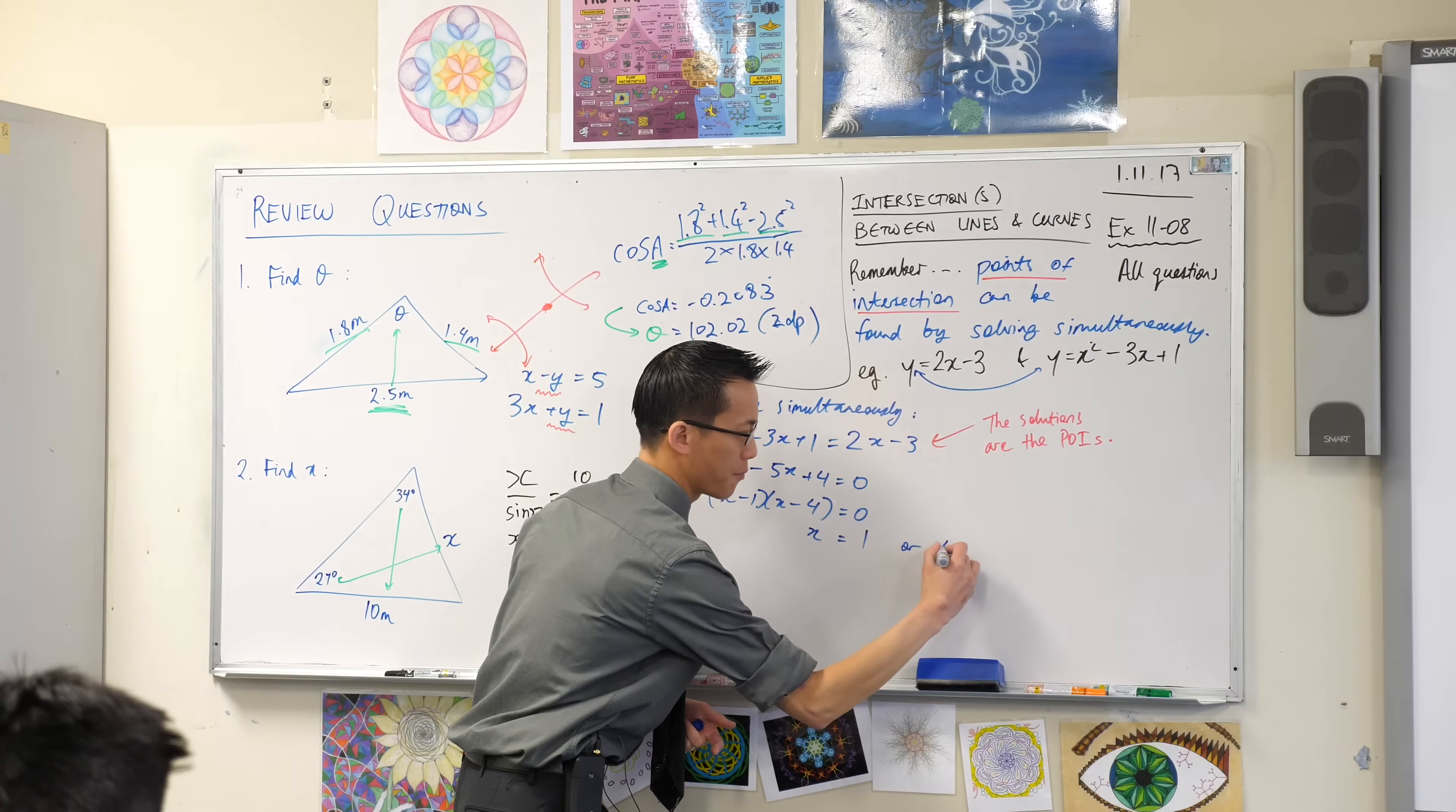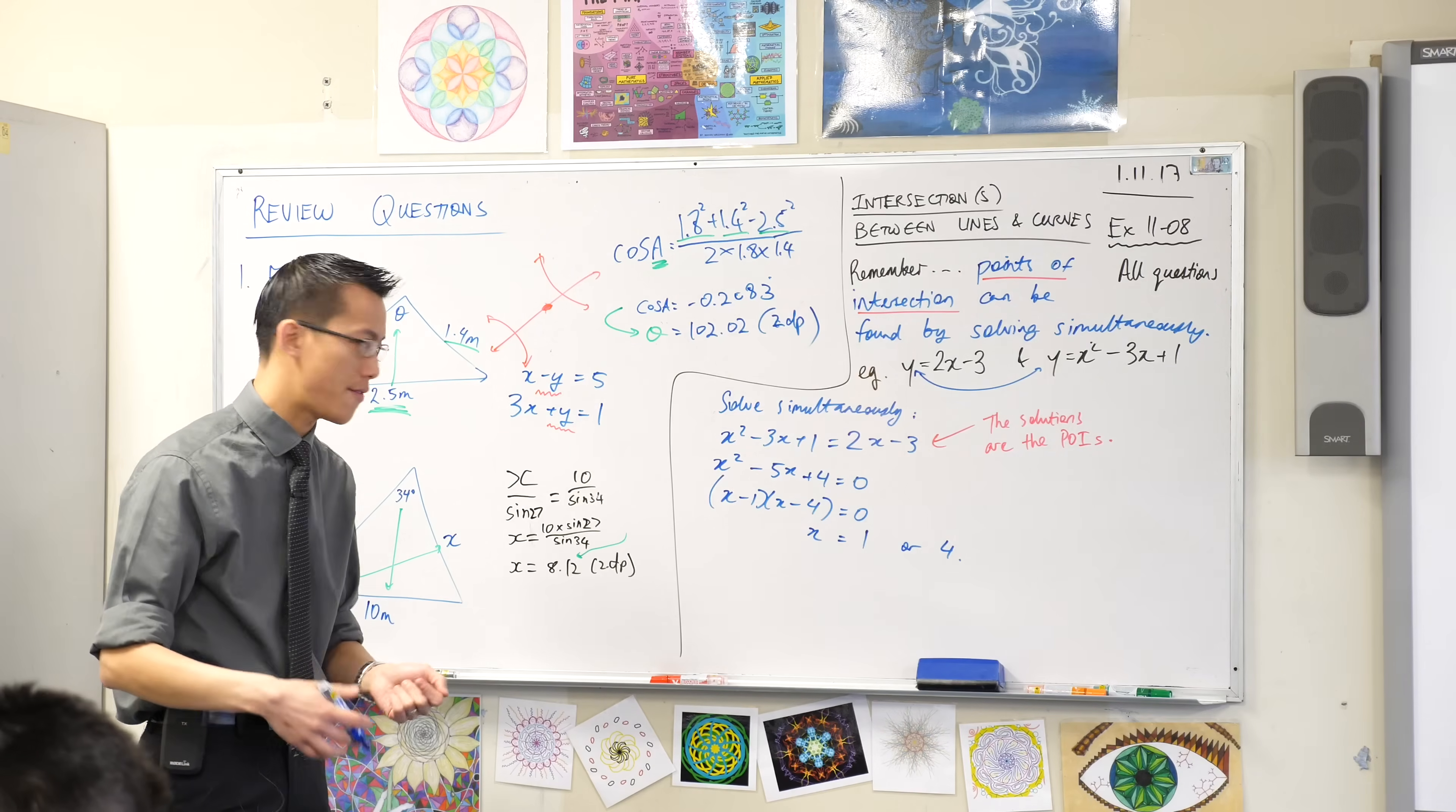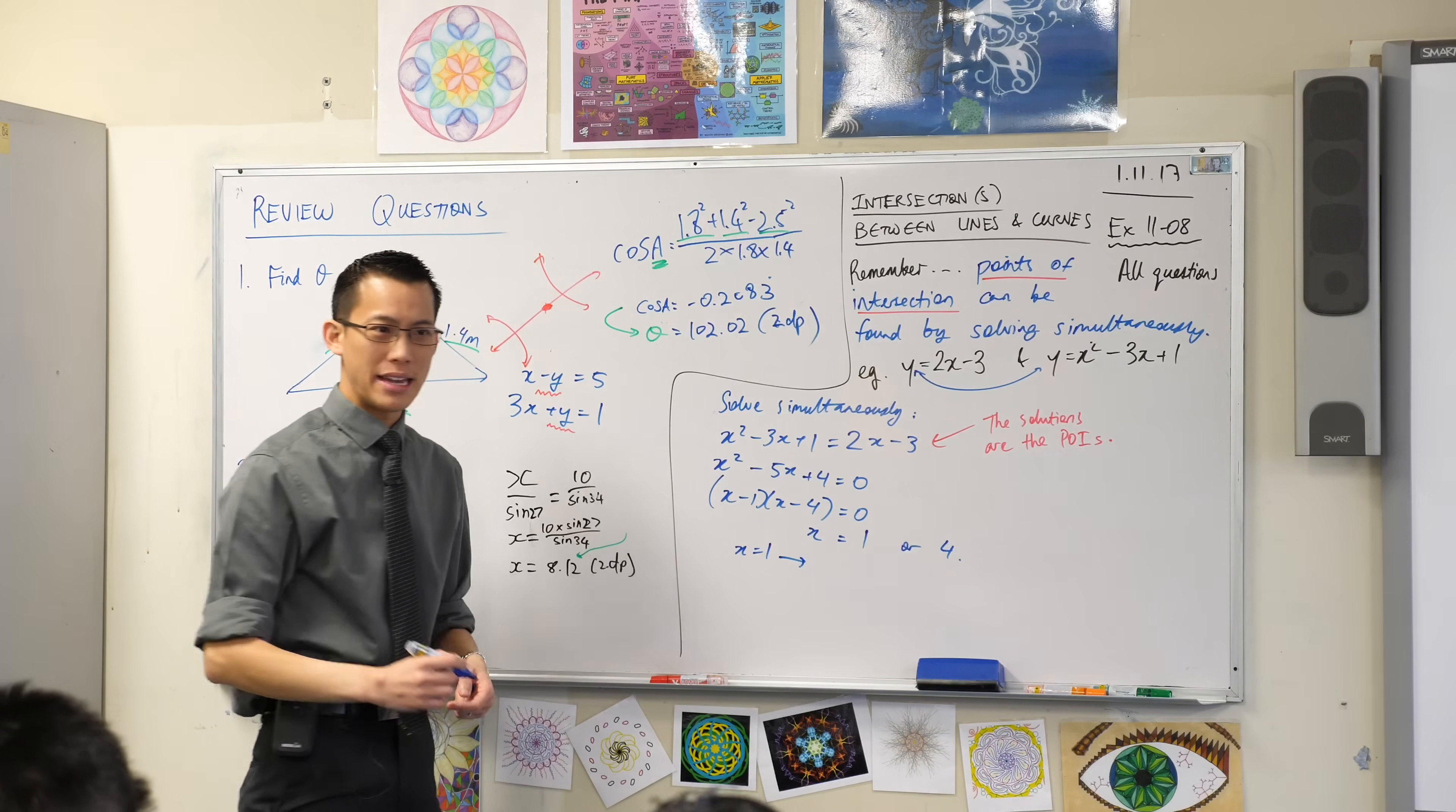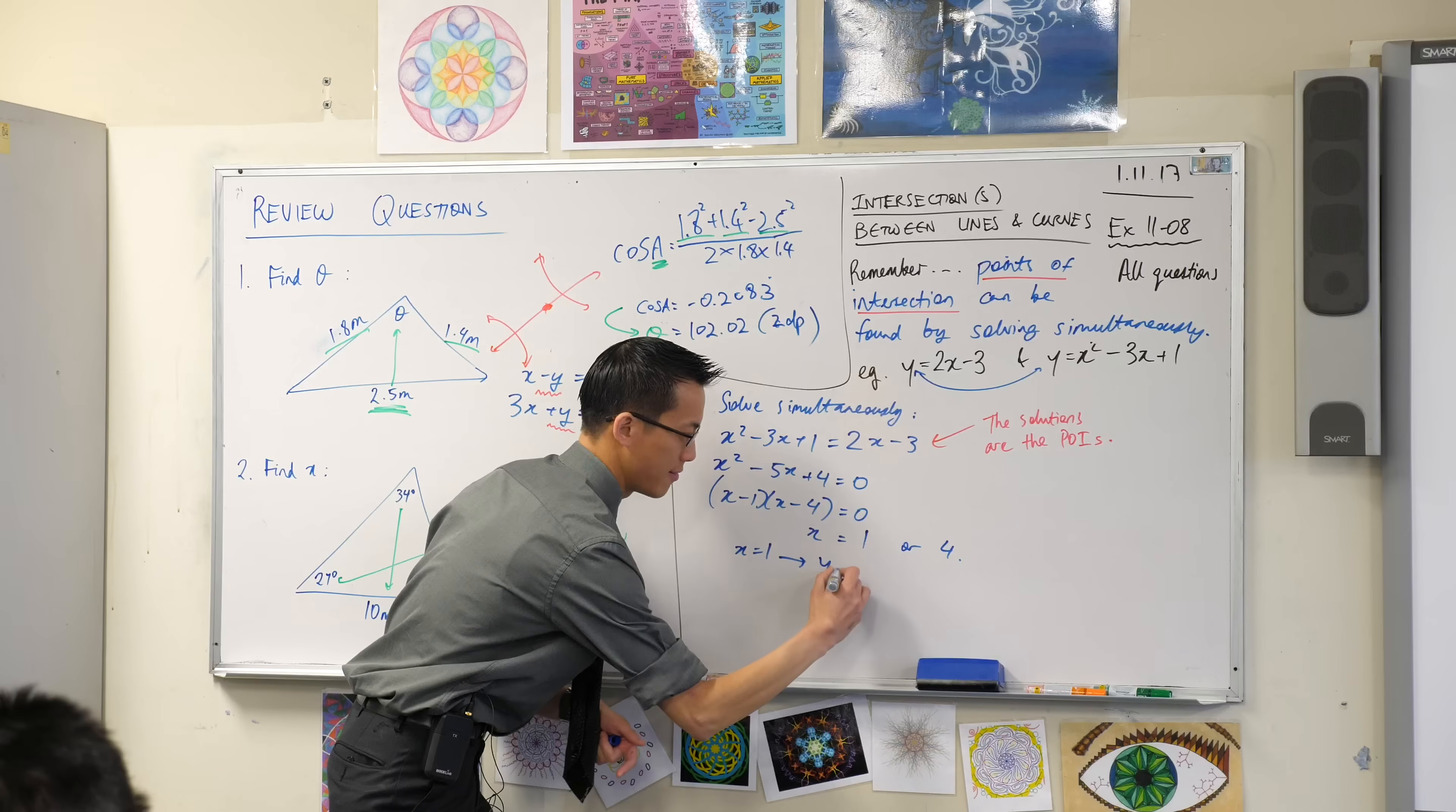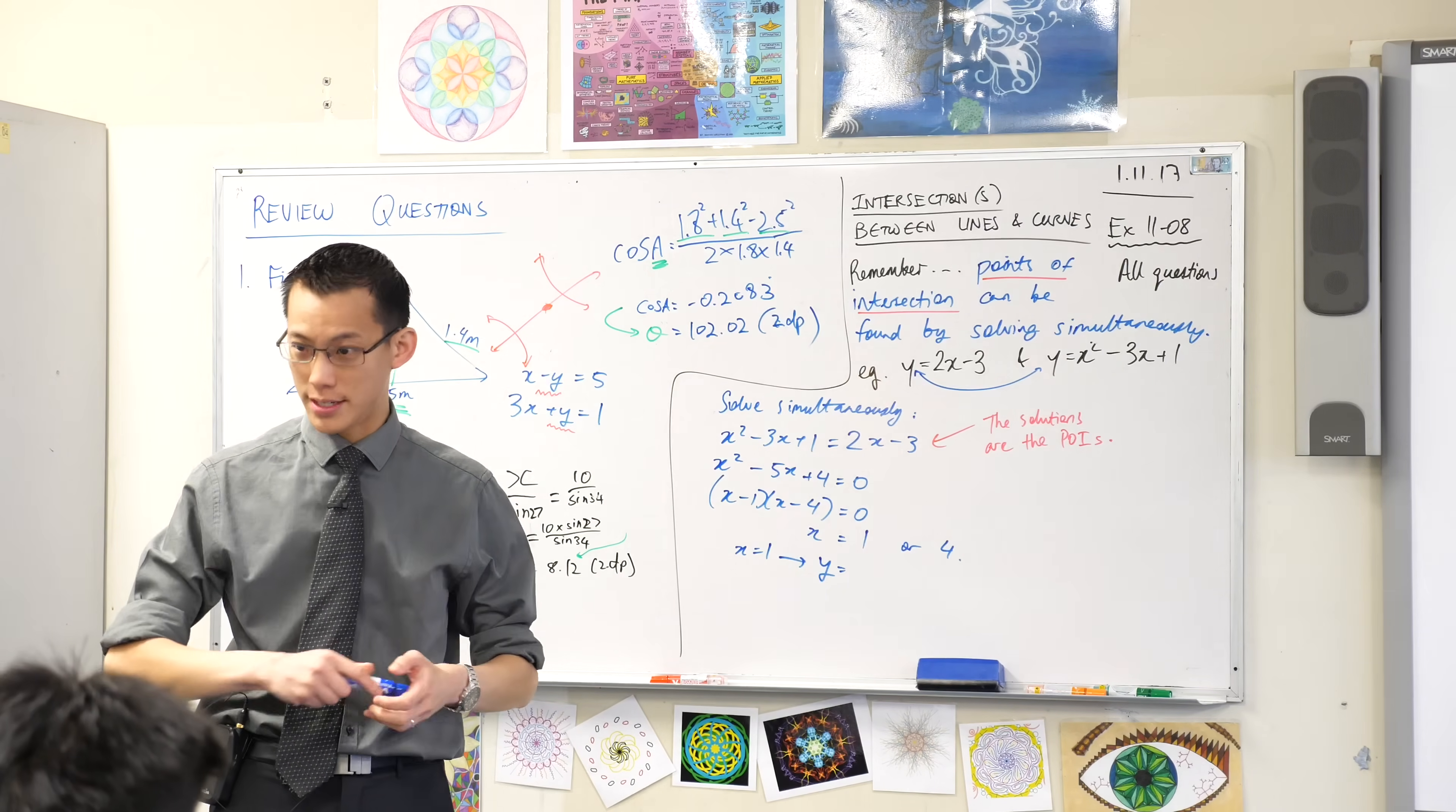It's 1 or 4, right? Each x value corresponds with a y value, so I would say x equals 1 means y equals... now let's think about this.